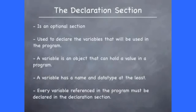Important concepts associated with the declaration section. Firstly, it is an optional section, used to declare variables that will be used in a program. A variable is an object that can hold a value in a program. A variable is given a user-defined name and is identified with a data type. The data type identifies the type of value the variable can store. Every single variable that you reference in a program should be declared in the declaration section.